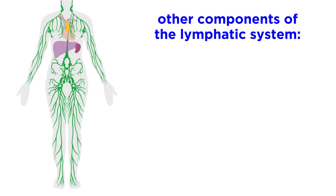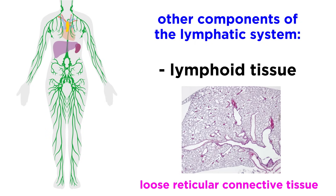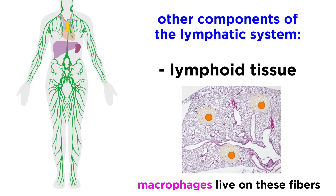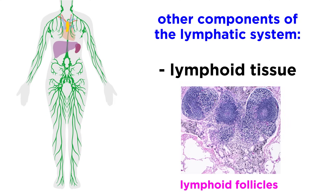There are also other components in the lymphatic system. Lymphoid cells are immune system cells like lymphocytes, which we will discuss later. Lymphoid tissue is made of loose reticular connective tissue found all over the system except the thymus, and macrophages live on the fibers of this network. This can be either diffuse lymphoid tissue or lymphoid follicles, which are tightly packed spherical bodies.